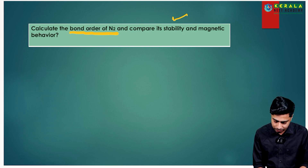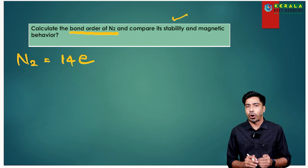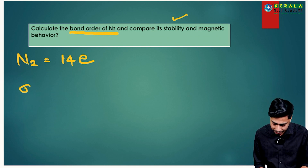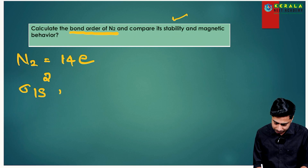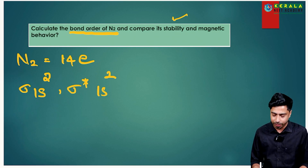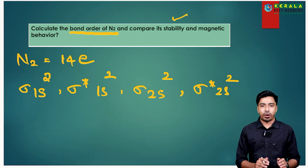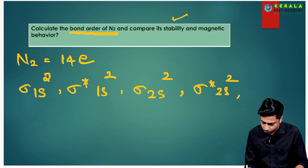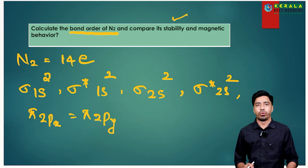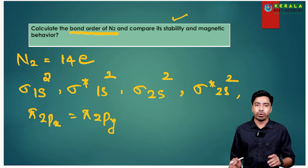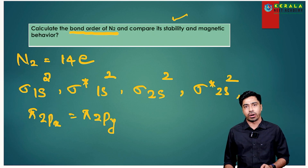The N2 molecule has a total of 14 electrons. We distribute them: σ1s² accommodates 2 electrons, σ*1s² accommodates 2 electrons, σ2s² accommodates 2 electrons, σ*2s² accommodates 2 electrons — that's 8 electrons so far. We have 6 more electrons. For π2px and π2py, which have equal energy, if you have 1 electron give it to π2px; if 2 electrons, distribute one each.